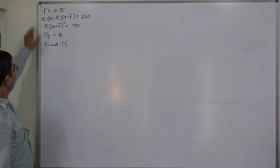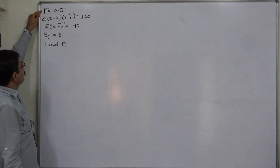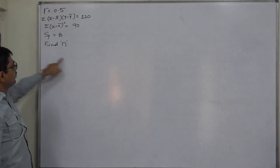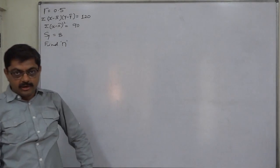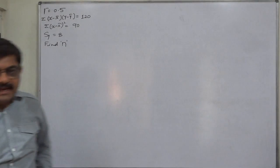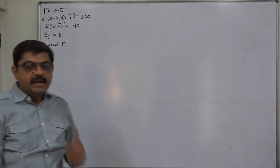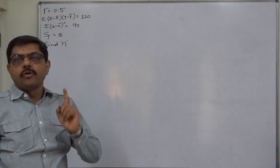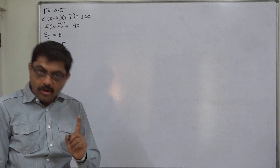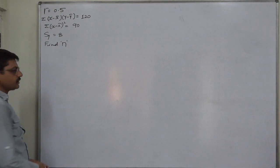But if we write the formula of coefficient of correlation, all these have their own role in that formula. So to find n as a missing entity, we need to write the formula of coefficient of correlation and not the formula of standard deviation of y.